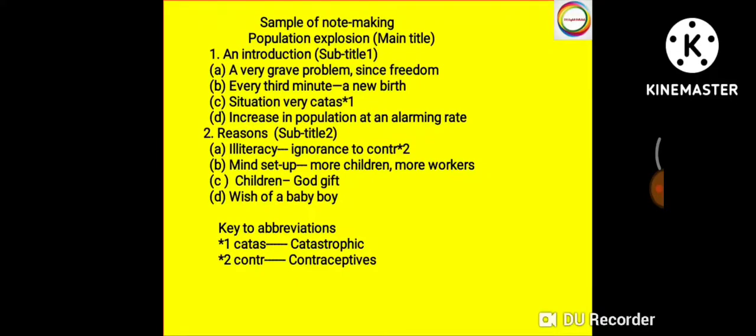Look at the second part showing reasons for population explosion. You can see abbreviations are used. In the first block, you can see 'CATAS' with a star mark. Similarly in the second block, 'CONTR' is used. One abbreviation should definitely be used in each block. You should use at least four to five blocks in note-making questions.